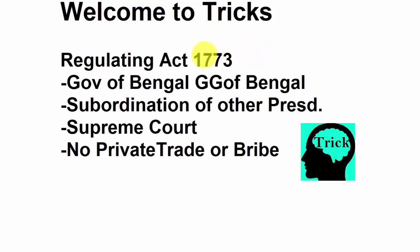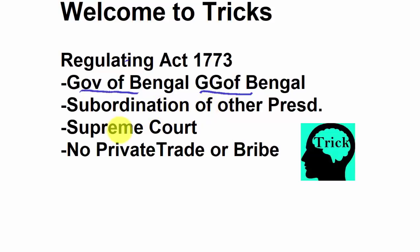Coming to the Regulating Act of 1773, four important provisions were: first, the Governor of Bengal was made Governor General of Bengal; second, the two other presidencies — Madras and Bombay — were subordinated to the Bengal presidency; third, a Supreme Court was established in Calcutta; and fourth, the company was stopped from doing any private trade or taking any bribe.